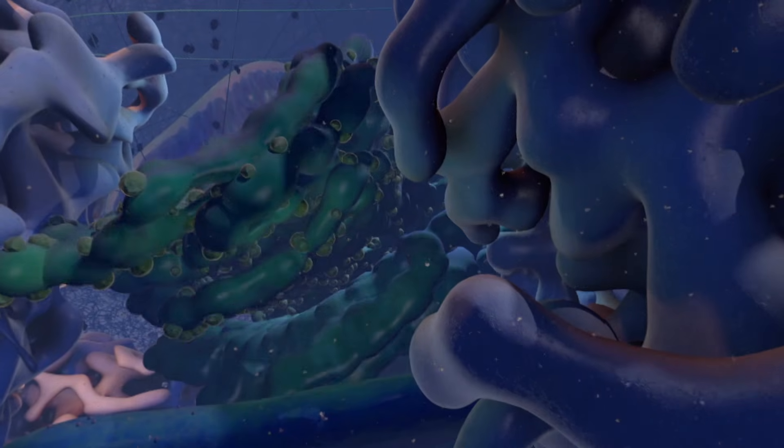After they're made, proteins move through the channels of the ER to different locations, and many of them end up in the Golgi apparatus, which is here.